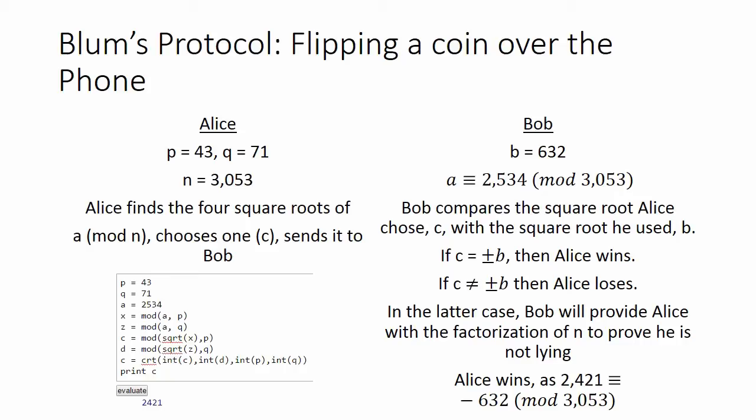In our case, the code provided shows how Alice could calculate one of the square roots which she calculated to be 2,421 mod 3,053, which is congruent to negative 632 mod 3,053.